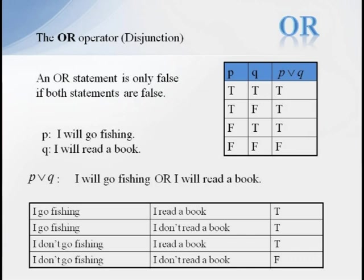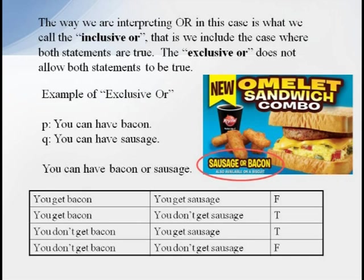We can make a similar type argument for the OR operation. An OR operation is only false if both statements are false. For instance, if someone claims, I will go fishing or I will read a book. If they do either of these, then the statement is considered true. The only way the statement would be false is if they don't go fishing and they don't read. So our truth table only has one false value, and that is when both P AND Q are false.